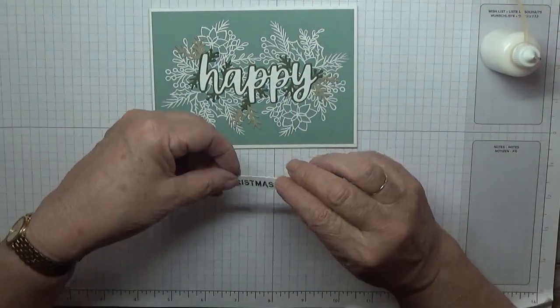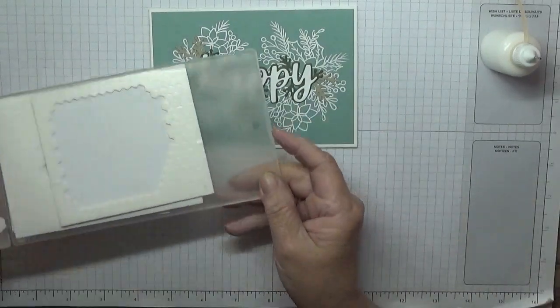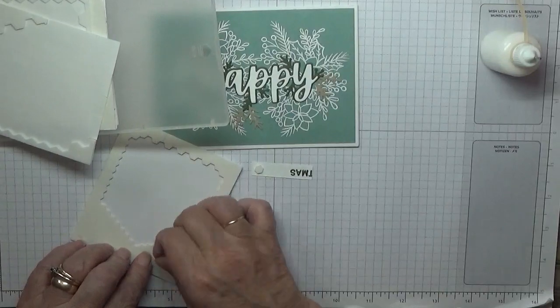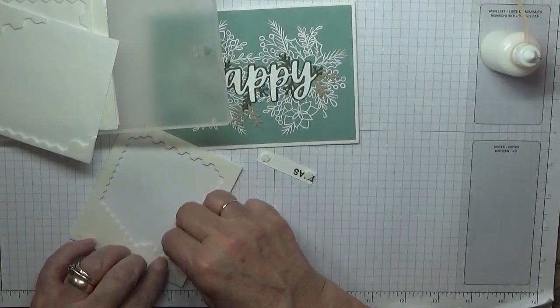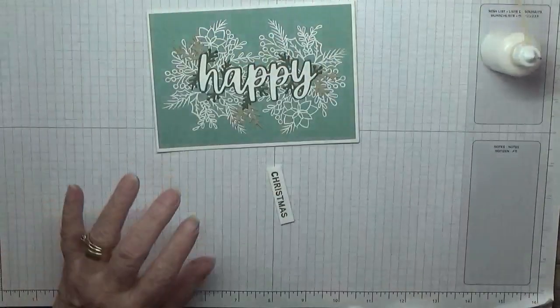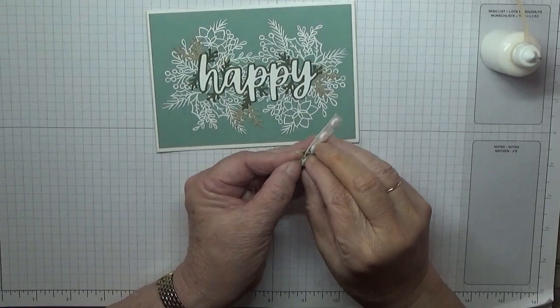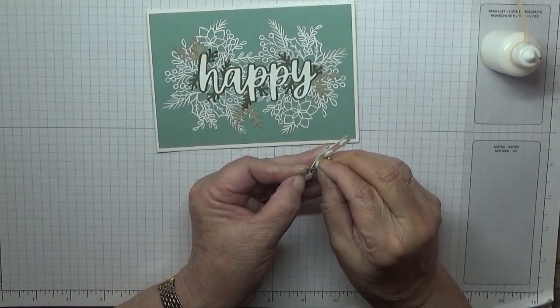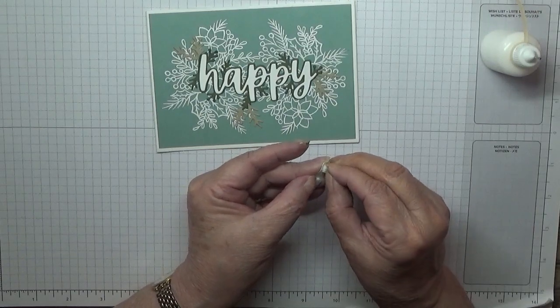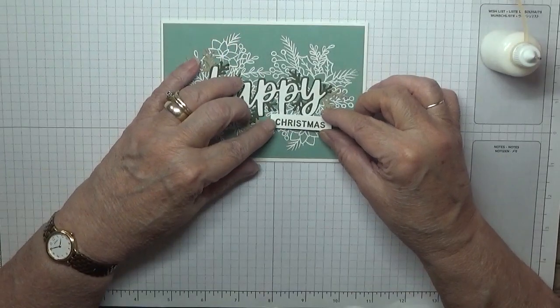And now Christmas, which I'm going to put on dimensionals. Using the small ones, which is four. So back's off, and I'm going to put this just under the P and the Y.